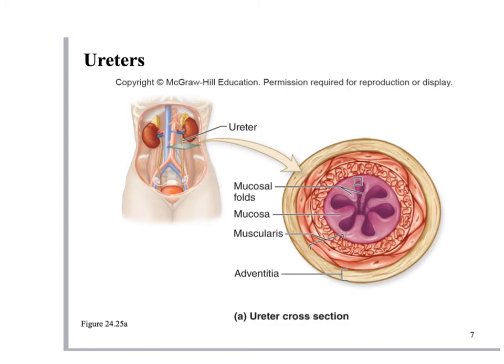The ureters are distensible, meaning they can expand. In the case of urinary reflux, when the bladder contracts and urine is pushed back, there is a higher volume than what the ureter normally contains, so the ureter distends and expands.